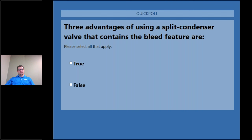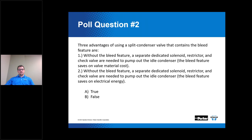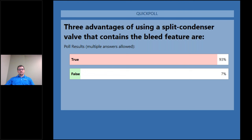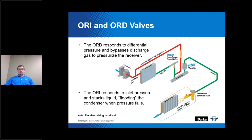The majority got this correct — 93 percent chose True, 7 percent chose False. The three advantages of using a split condenser valve with the bleed feature are: it eliminates the need for a separate solenoid, restrictor, and check valve, saving on valve material cost; it saves on electrical energy; and bleeding the idle condenser reduces the total refrigerant charge in the system.